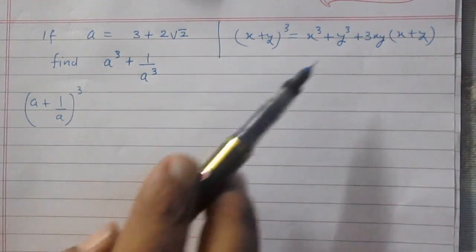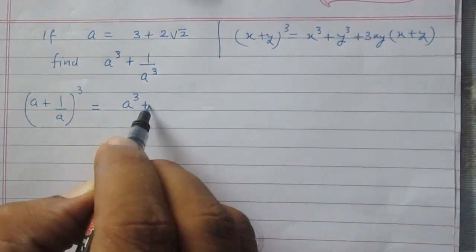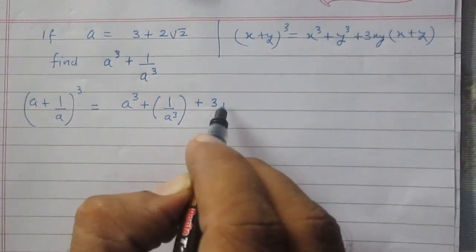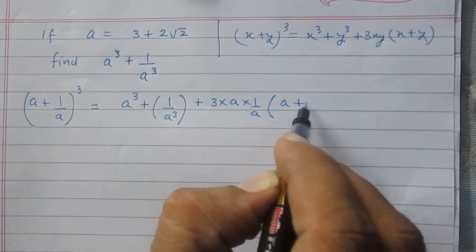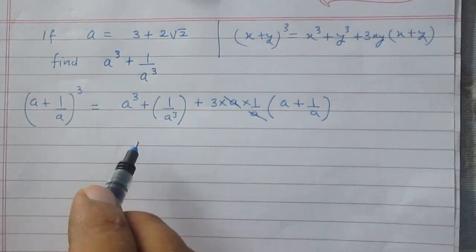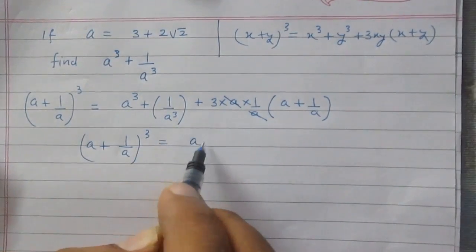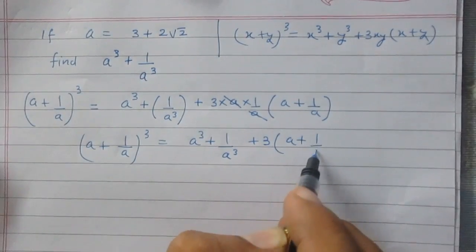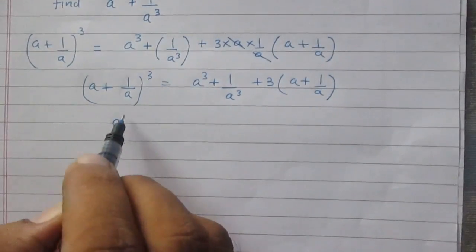Here x stands for a and y stands for 1 upon a. So it can be written as a cube, then 1 upon a cube, then thrice of xy which is thrice of a multiplied by 1 by a, whole multiplied by a plus 1 by a. Here a in the numerator cancels with a in the denominator, giving a plus 1 by a whole cube equals a cube plus 1 by a cube plus thrice of a plus 1 by a.